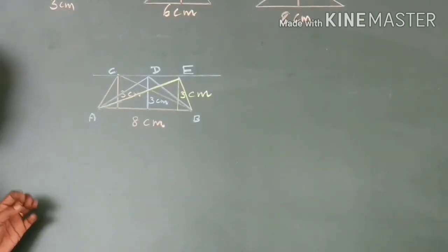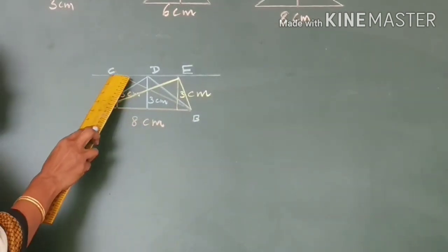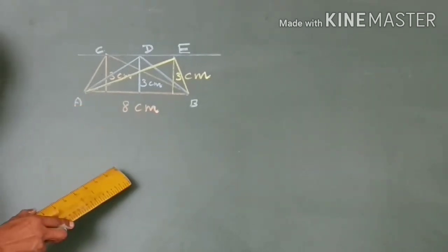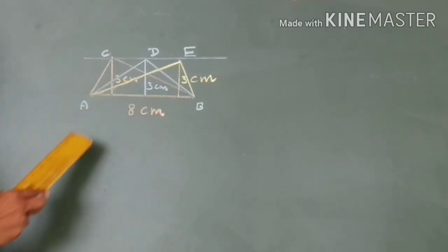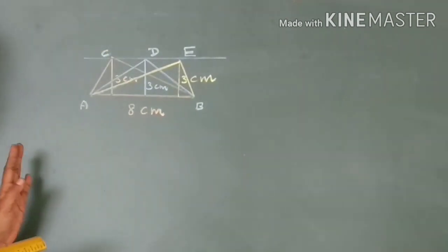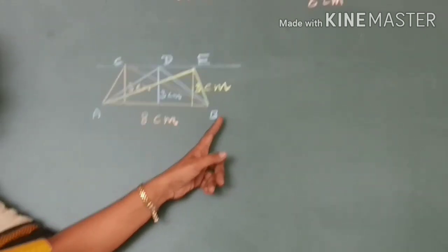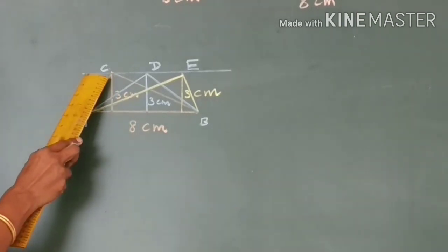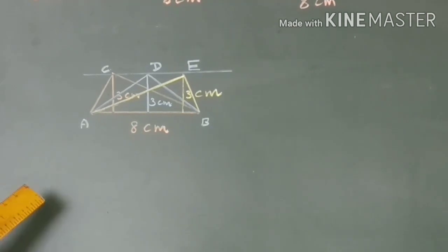The other way of saying it: all triangles with the same base and third vertex on a line parallel to the base have the same area. Using this idea, we are going to work out problems in your textbook.